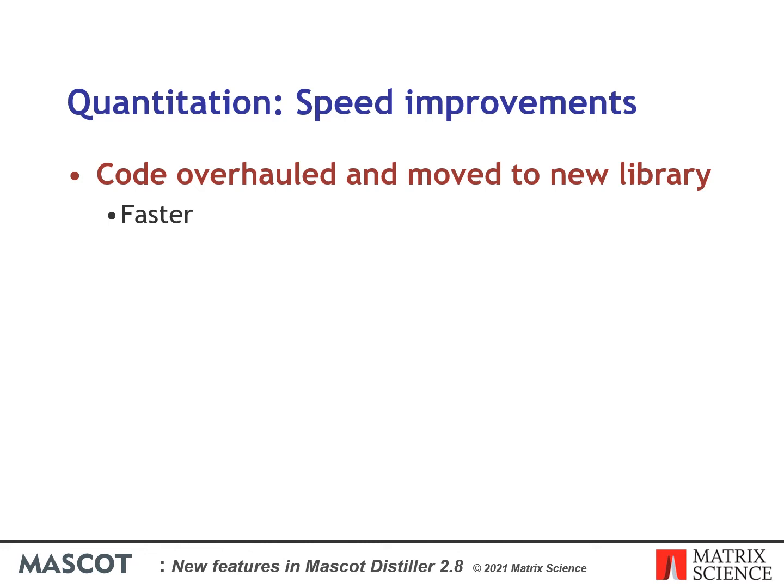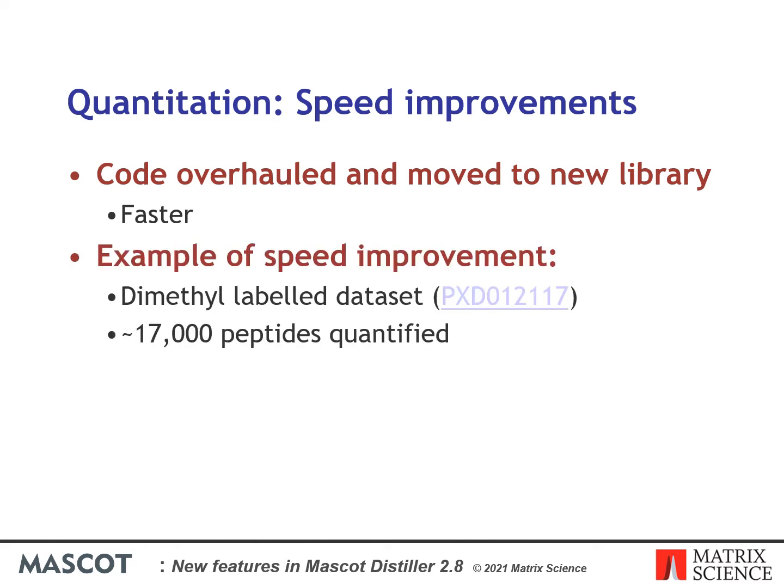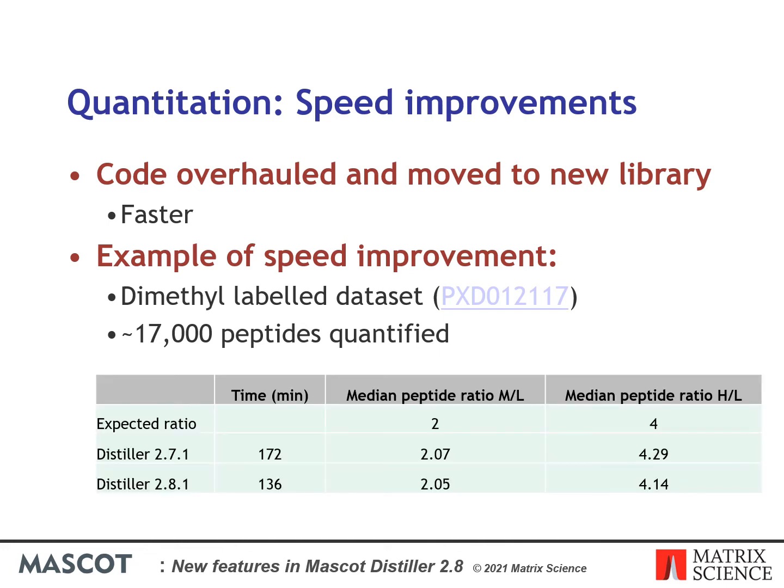As an example, we took a dimethylated light, medium, and heavy label dataset from the PRIDE repository. This is a spiked-in dataset where medium over light has an expected ratio of 2 and heavy over light has an expected ratio of 4. We processed the raw files in Distiller, searched using Mascot, and then carried out quantitation using Distiller 2.7.1 and 2.8.1 on the same hardware.